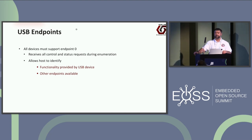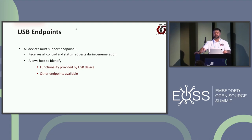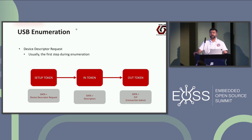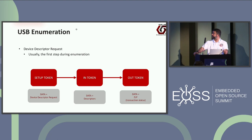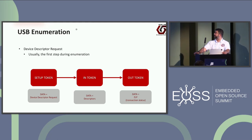All devices must support endpoint zero, which receives all control and status requests during enumeration. This endpoint allows the host to identify the functionality provided by the device and which other endpoints are available. The enumeration process starts with a device descriptor request: you have a setup token with the device descriptor request, then the host requests and receives the descriptors back, and then the OUT token confirms readiness — essentially saying, I have all the descriptors of the endpoints and services you support, are you ready for the next transaction?